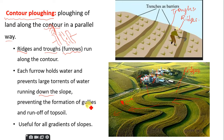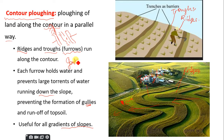Contour plowing also prevents the formation of gullies and runoff of the topsoil. It is useful for all gradients of slope — whether it is a gentle or steep slope. That's the key difference between terracing and contour plowing.